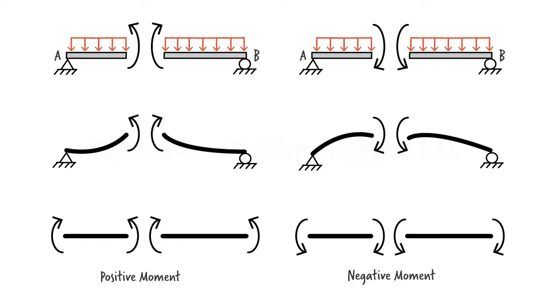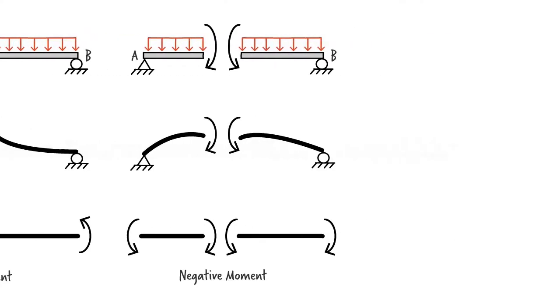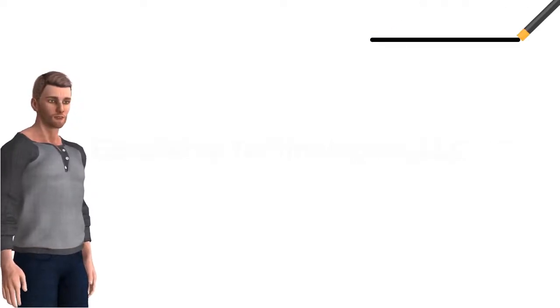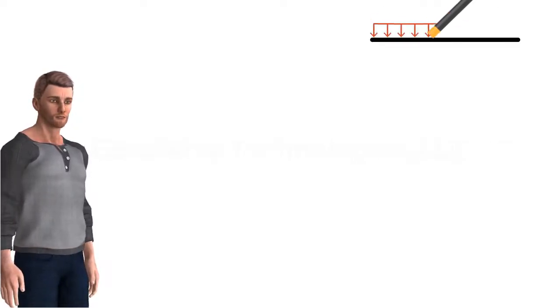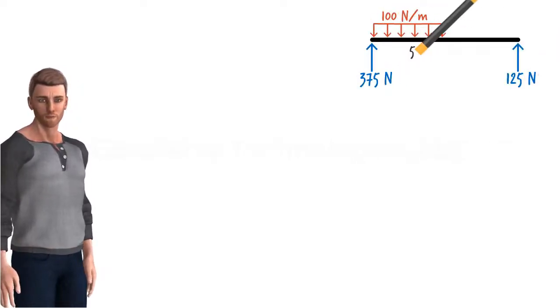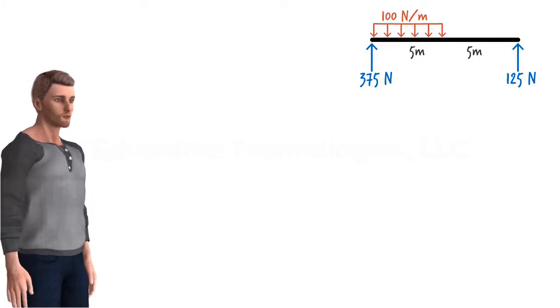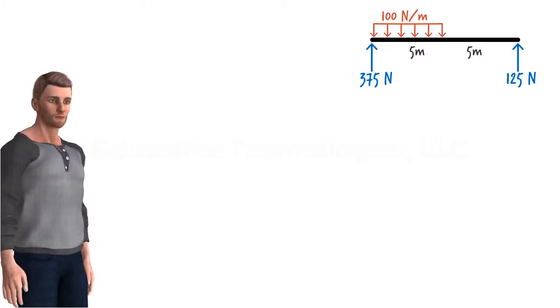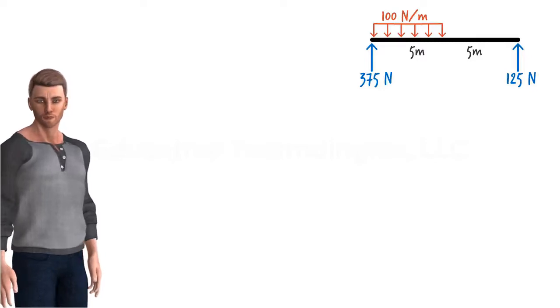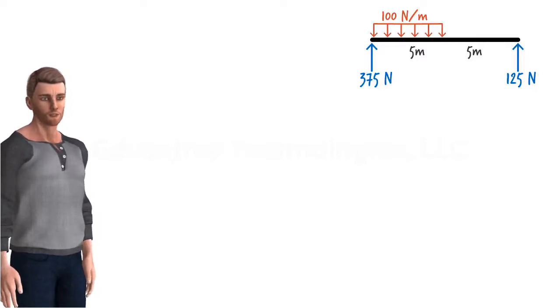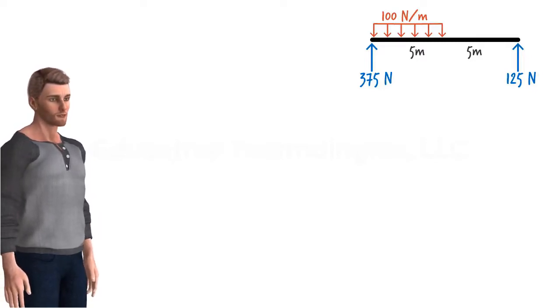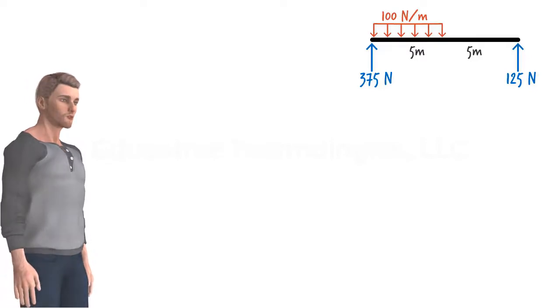Now on to drawing shear and moment diagrams. One way to draw the diagrams is to graph their corresponding equations. For example, for this beam, we can easily formulate the shear and moment equations. We talked about the procedure for coming up with these equations in a previous lecture, so we're not going to talk about that again today. Let's just assume the equations have been derived already and we have them. Here they are.